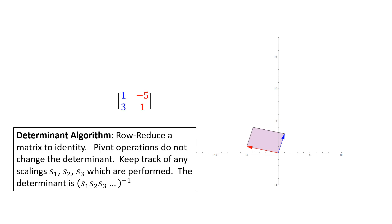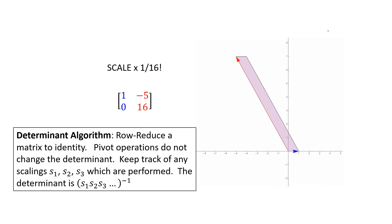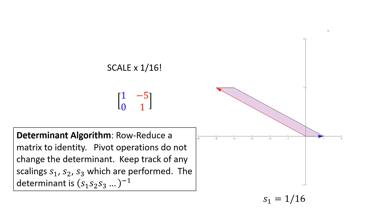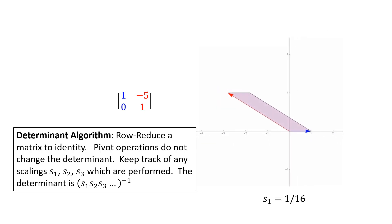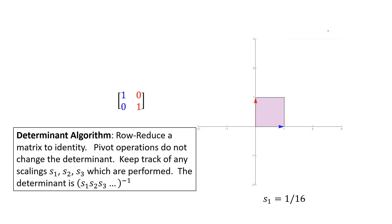Our problem worked out like this: first we sheared, which didn't change the determinant. Then we scaled by 1/16 vertically, giving us our first scaling factor of 1/16. And finally we sheared, giving us a determinant of 1. So we concluded, taking the reciprocal of any scalings that we used, that the determinant of our original transformation was 16.